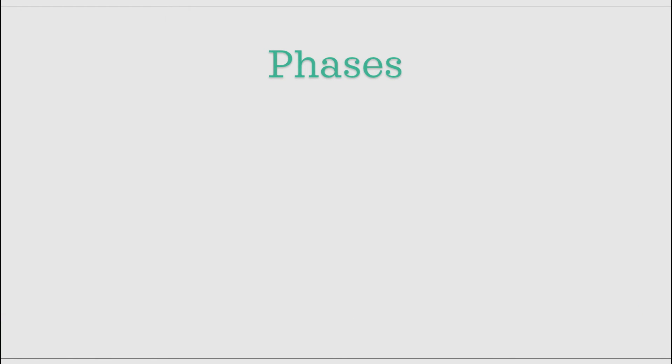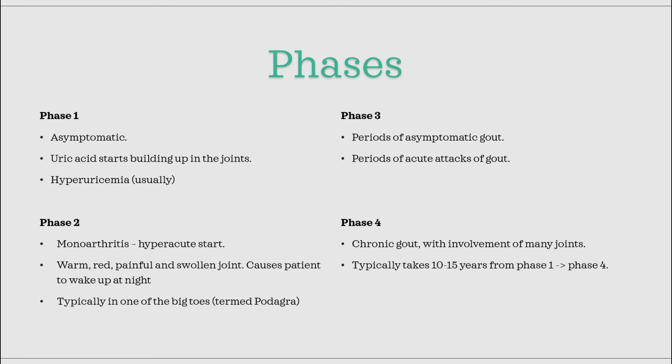We can divide the symptomatology of gout into four phases. In the first phase, there are no symptoms — uric acid will start building up in the joints, and in most cases there will be hyperuricemia, though it is not necessary for uric acid crystals to build up. In the second phase, the first attack of arthritis occurs. This is classically a case of monoarthritis which attacks one big toe, called podagra. The joint will be warm, red, painful, and swollen, and the patient will typically be woken up at night due to the pain. The very first attack will be hyperacute — that means it has an extremely fast onset — while later ones will be less acute, still quite fast, but not as fast as the first one.